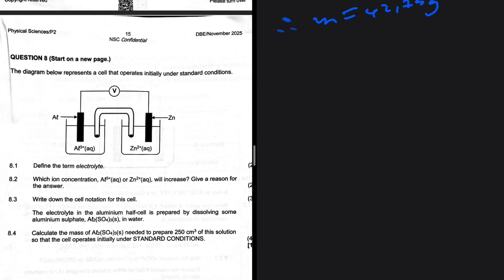There's a twist to 8.4. Let's do 8.2 first. Which ion concentration, Al³⁺ or Zn²⁺, will increase? Give a reason for the answer.